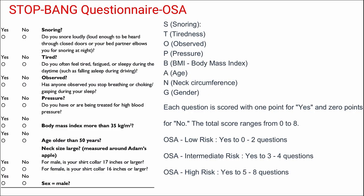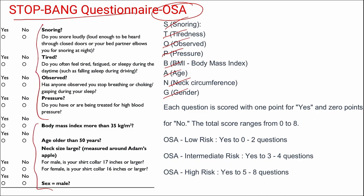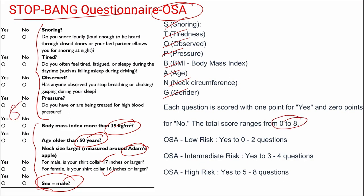Next is the STOP-BANG questionnaire for obstructive sleep apnea syndrome. STOP stands for Snoring, Tiredness, Observed apnea, and blood Pressure, while BANG stands for BMI (>35), Age (>50), Neck circumference (≥17 inches for males, ≥16 inches for females), and Gender (male). The total score ranges from 0 to 8: 0–2 indicates low risk for obstructive sleep apnea, 3–4 intermediate risk, and 5–8 high risk.